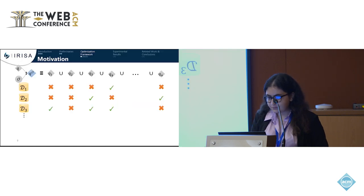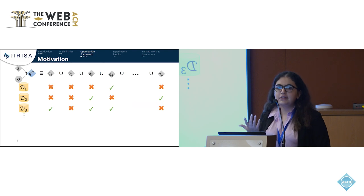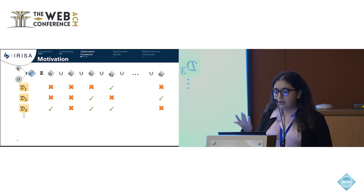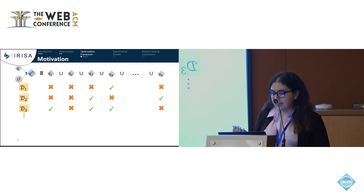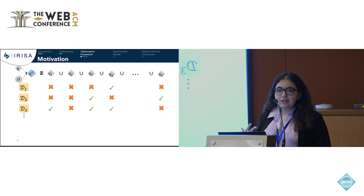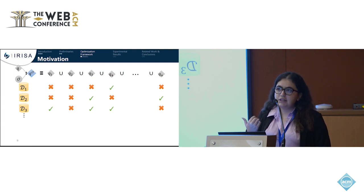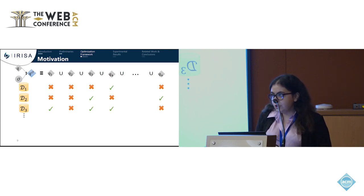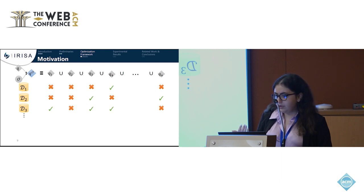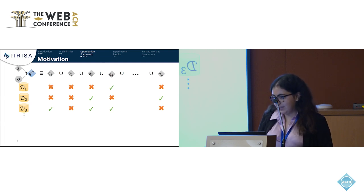Now for our optimization framework. A FOE rewriting reformulates a query with respect to the ontology into a union or join of conjunctive queries. In this figure, we can see that Q is reformulated with respect to O into N queries. These queries represent all the possible ways that answers to Q can be stored in the database — accommodating any database instance consistent with the ontology. But in practice, we usually ask the query over one specific instance. For example, taking database D1, only query Q4 actually returns an answer; for database D2, only Q3 and Qn return answers.